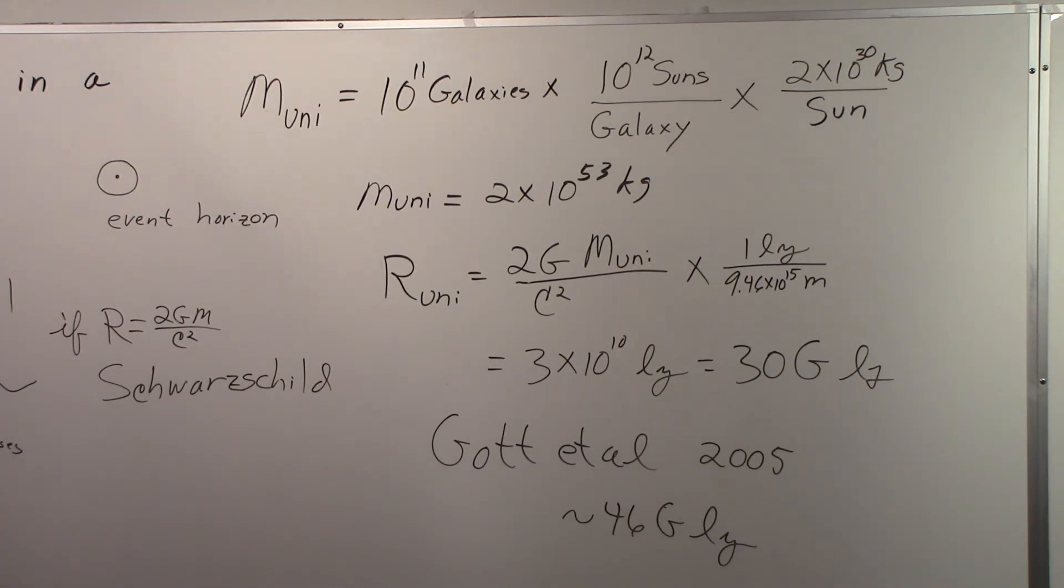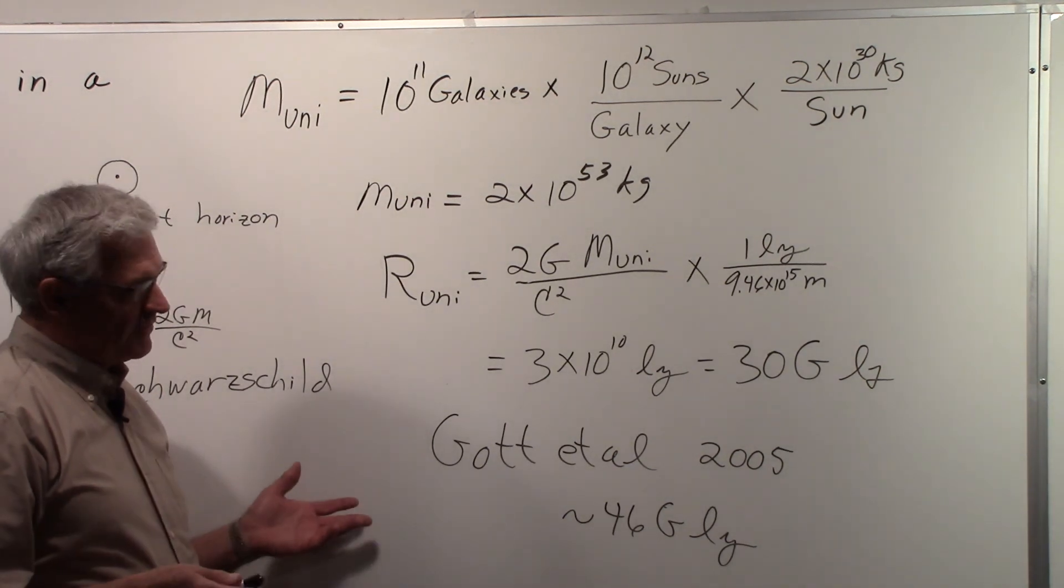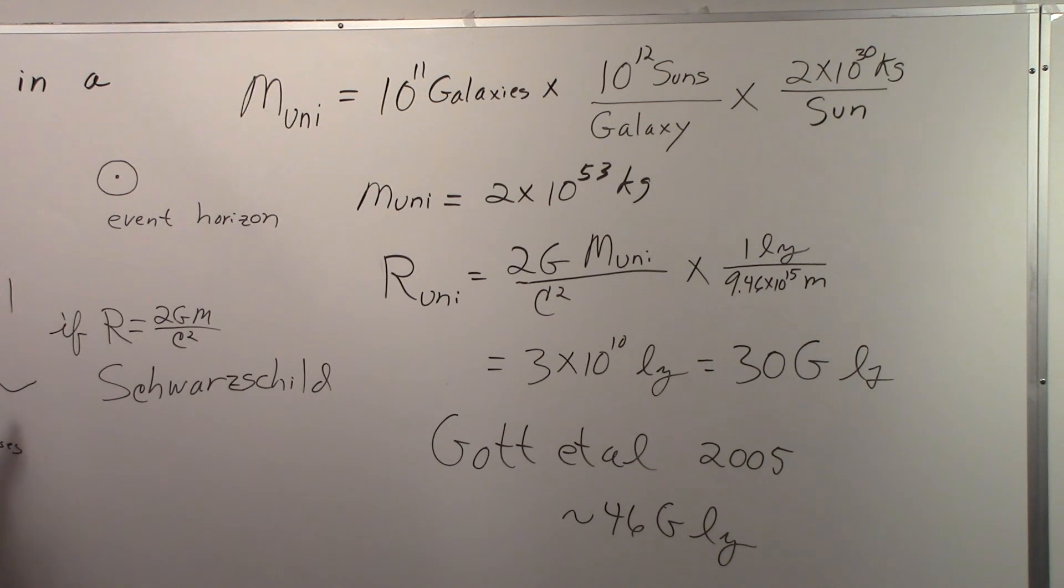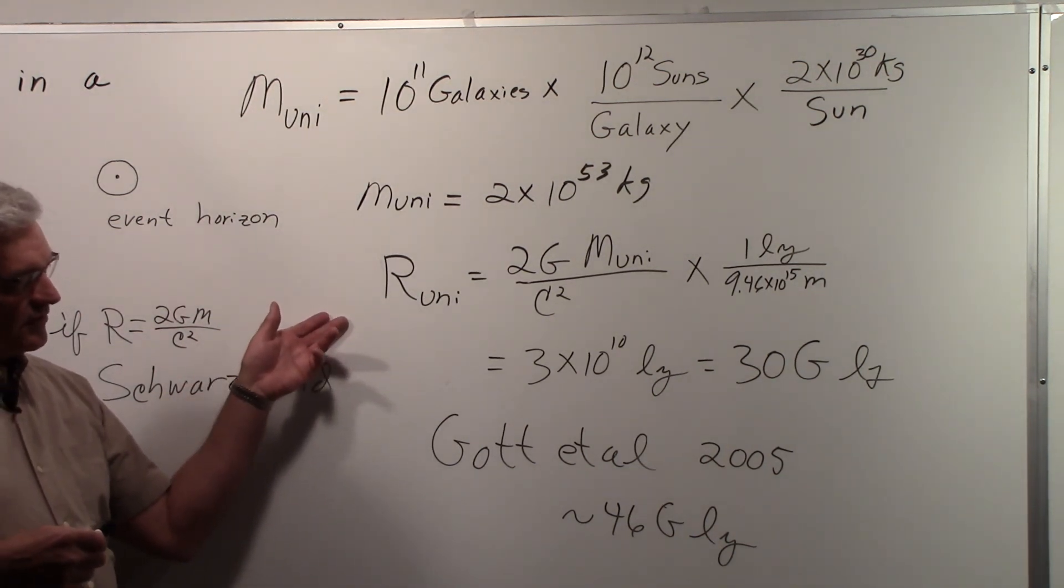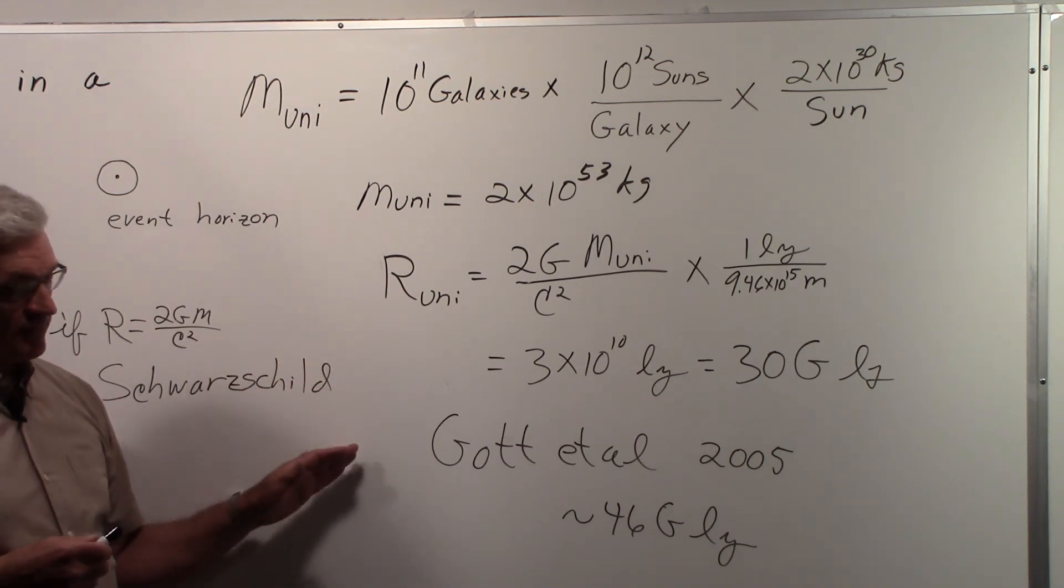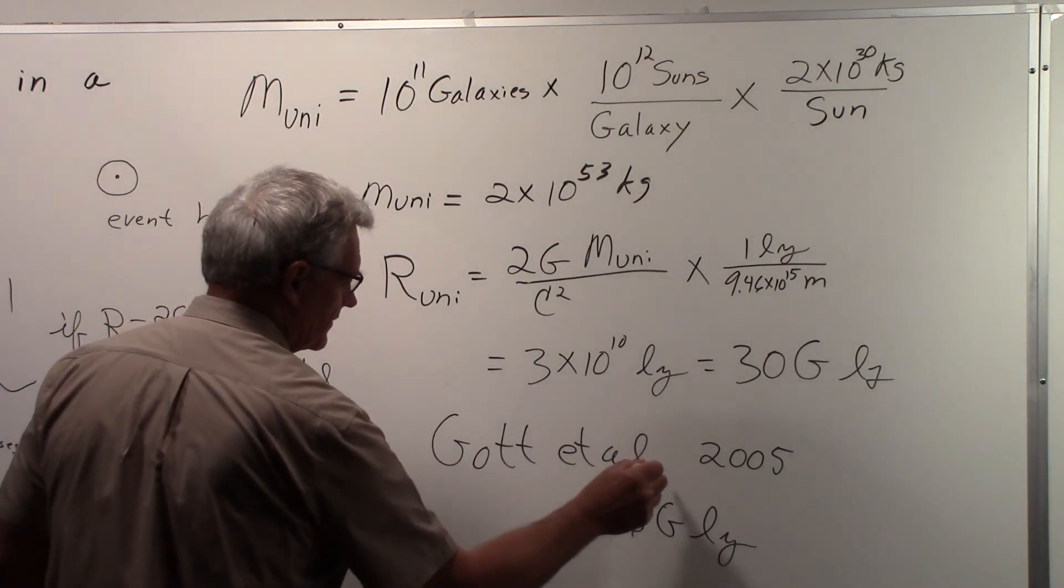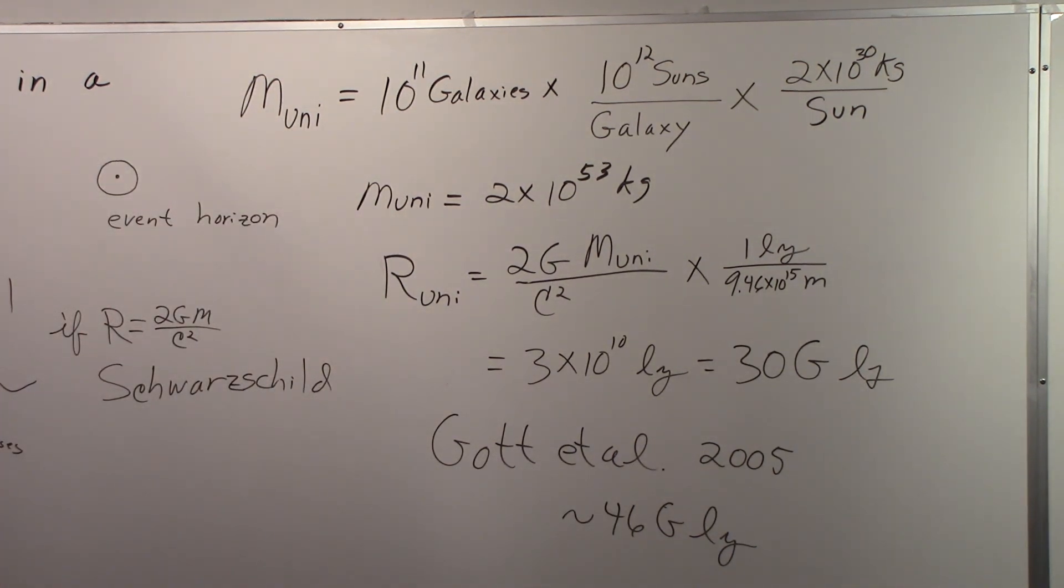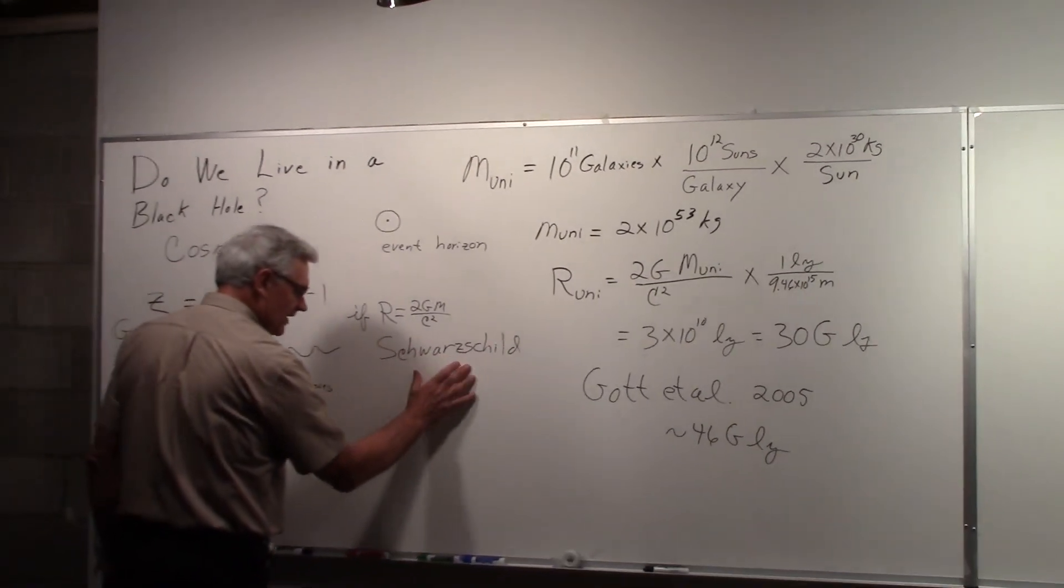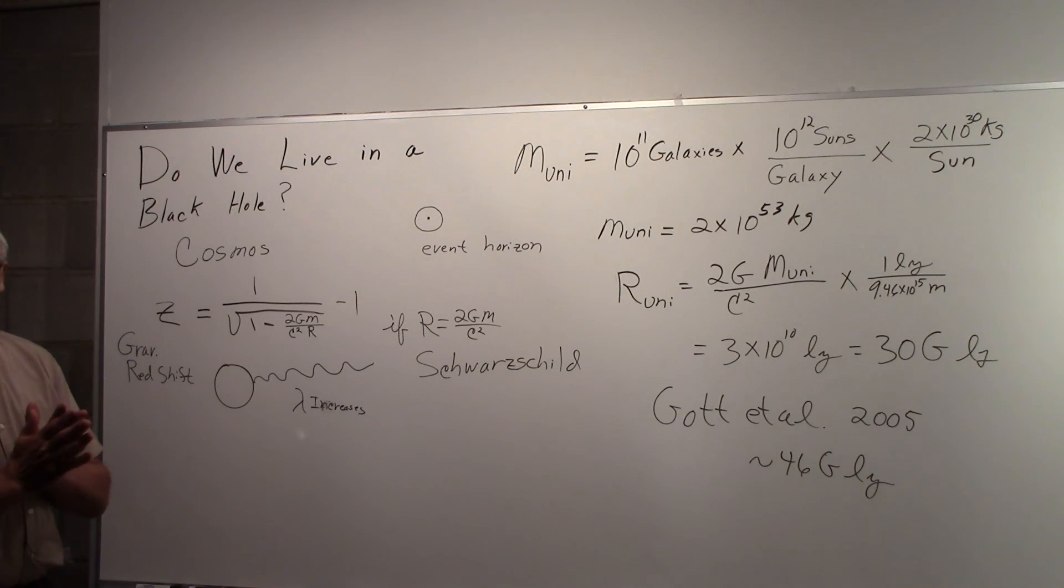So it's not exactly equal, but it's darn close. So if you want to think that we live in a black hole, you can kind of think about the size of the universe and what the Schwarzschild radius would be for our universe consisting of the mass that we came up with. And you find out that the radius of the universe is very close—the event horizon from the Schwarzschild radius is very close to what Gott and company had published. So do we live in a black hole? No. But it's kind of an interesting exercise to go through to show that the Schwarzschild radius for the mass we came up with for the universe is very close to what people say the radius of the universe is.